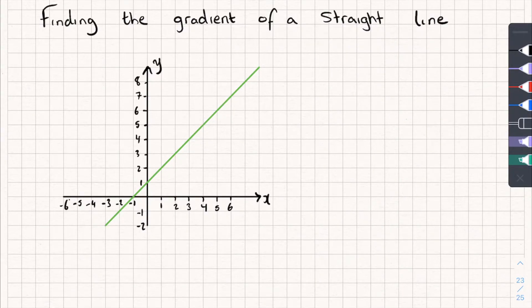So there is one thing we're going to need to remember for this, and it is the equation for the gradient, and it's really easy. The gradient is equal to the change in y divided by the change in x.